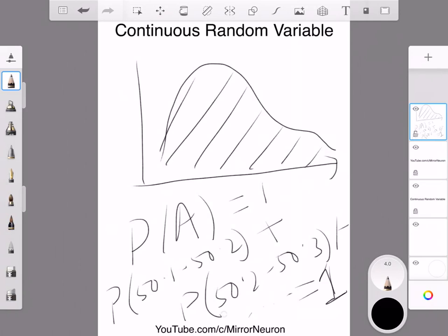All right, so that is the concept of continuous random variable. I hope you have learned something new today, and please do practice this concept because this is our last video on probability theory.